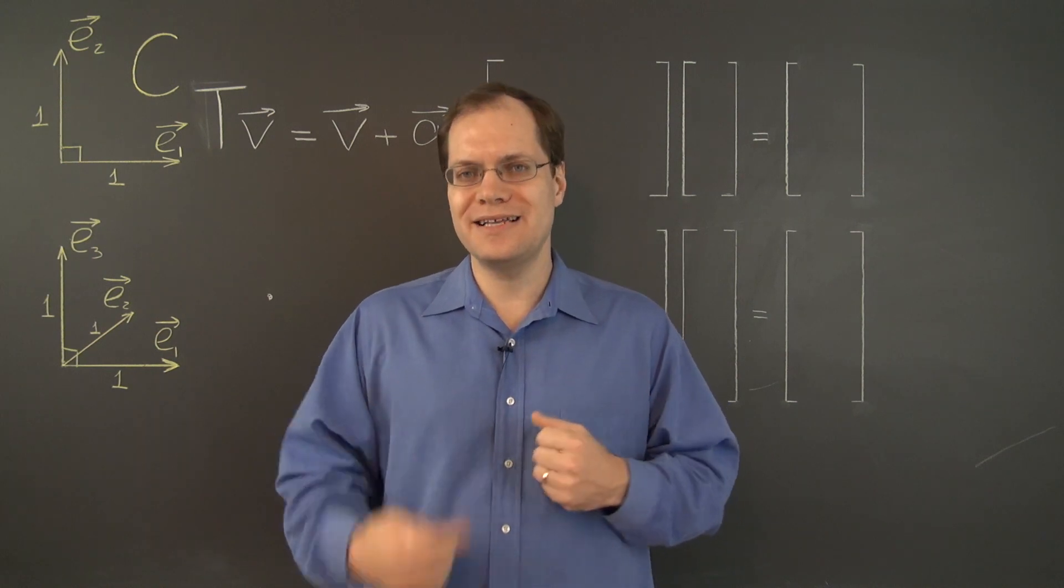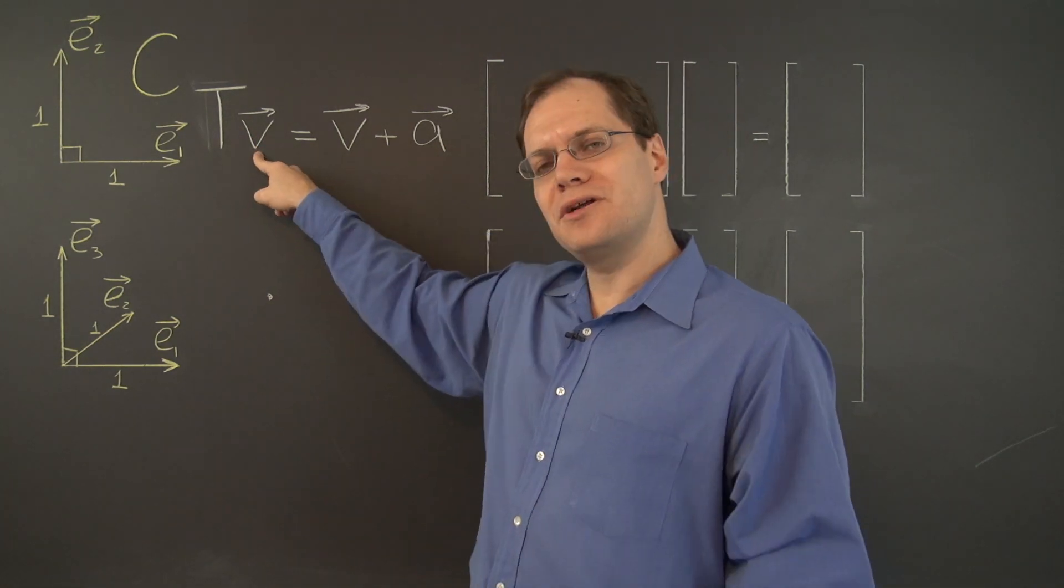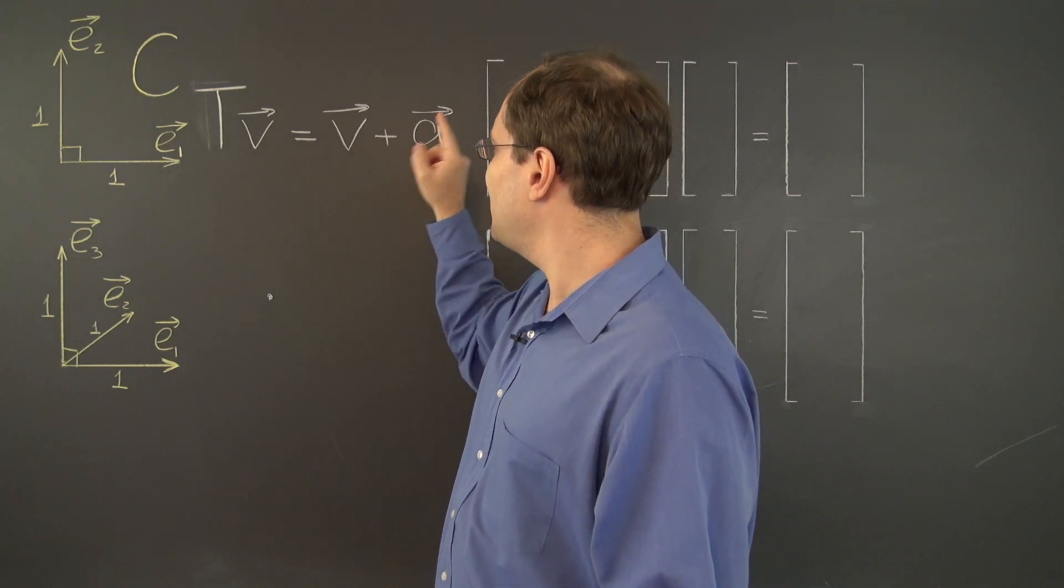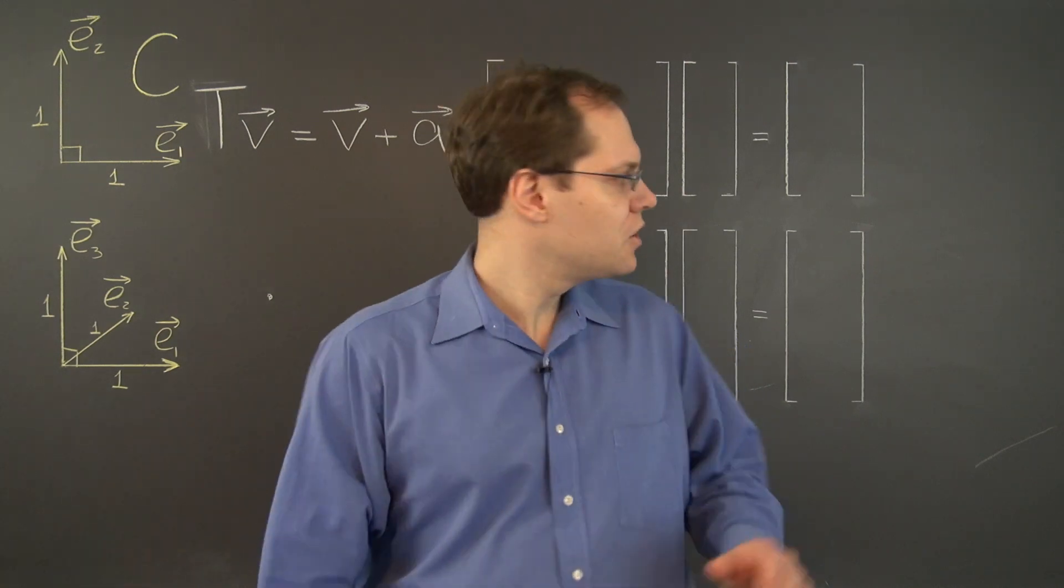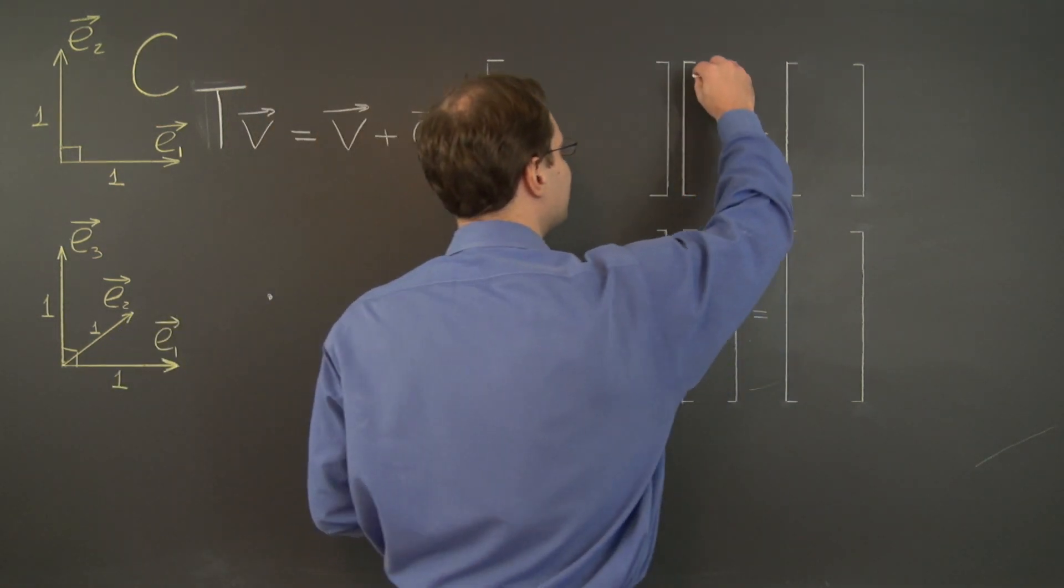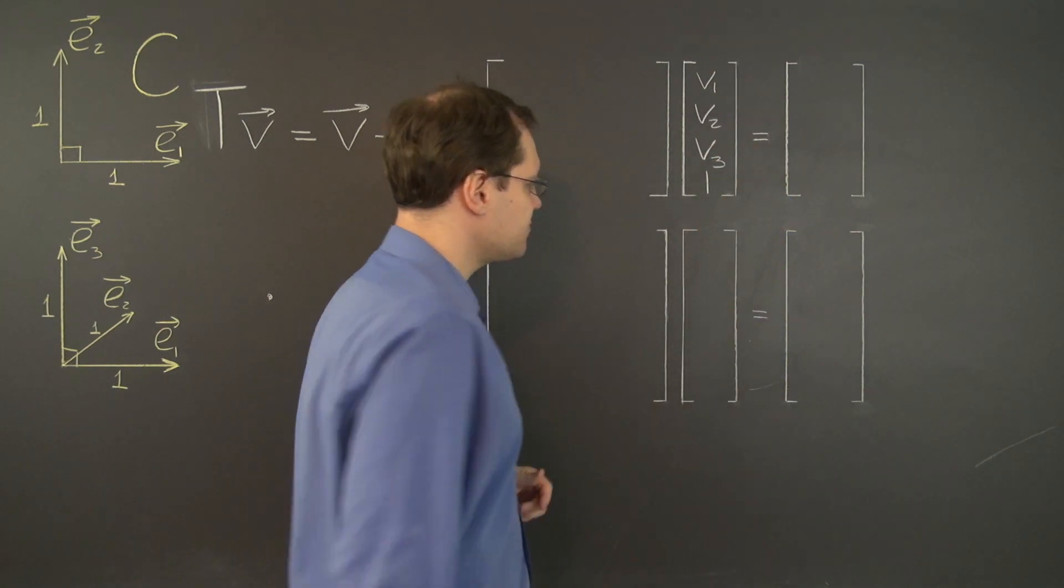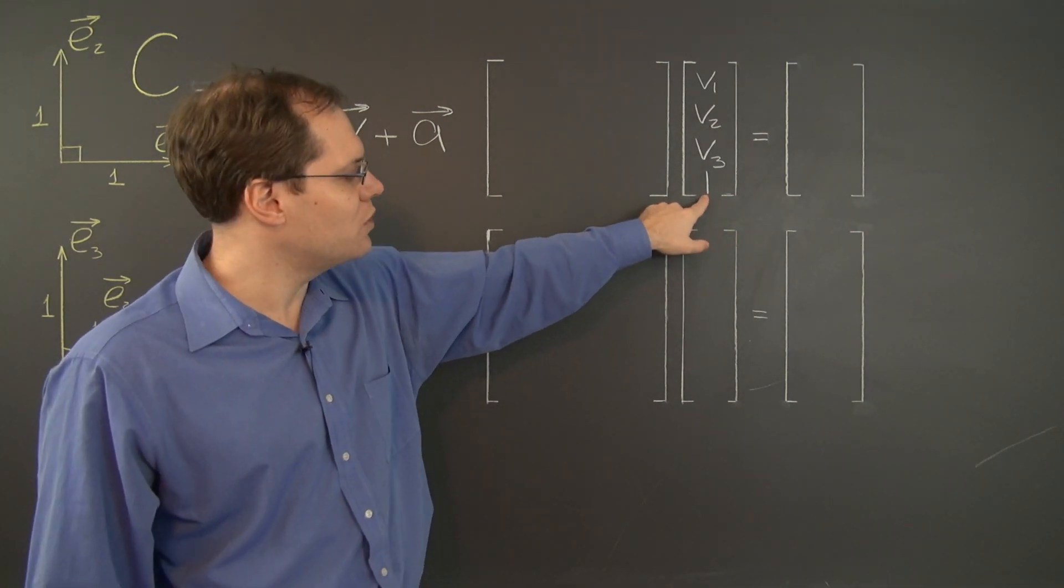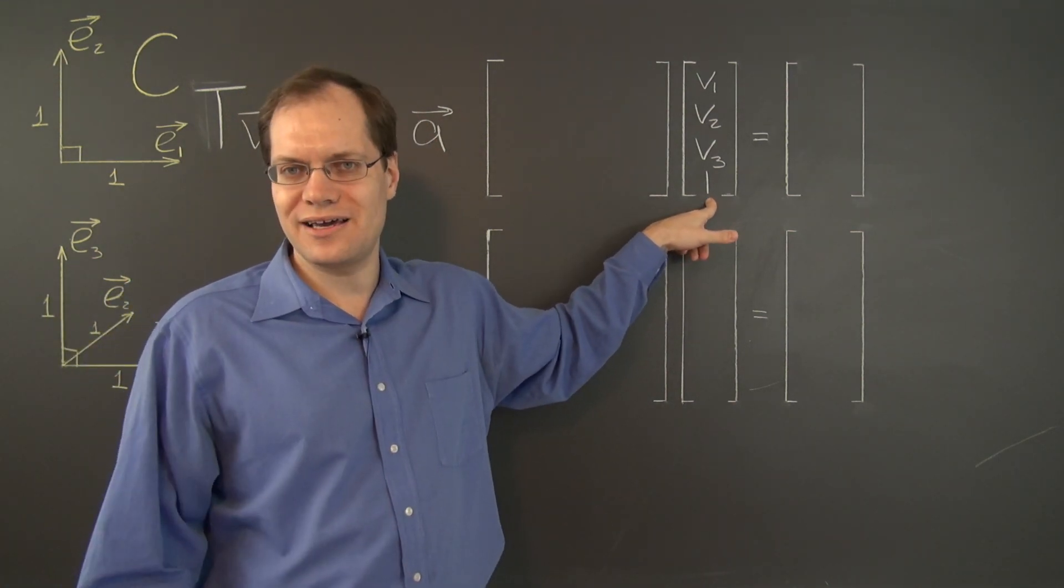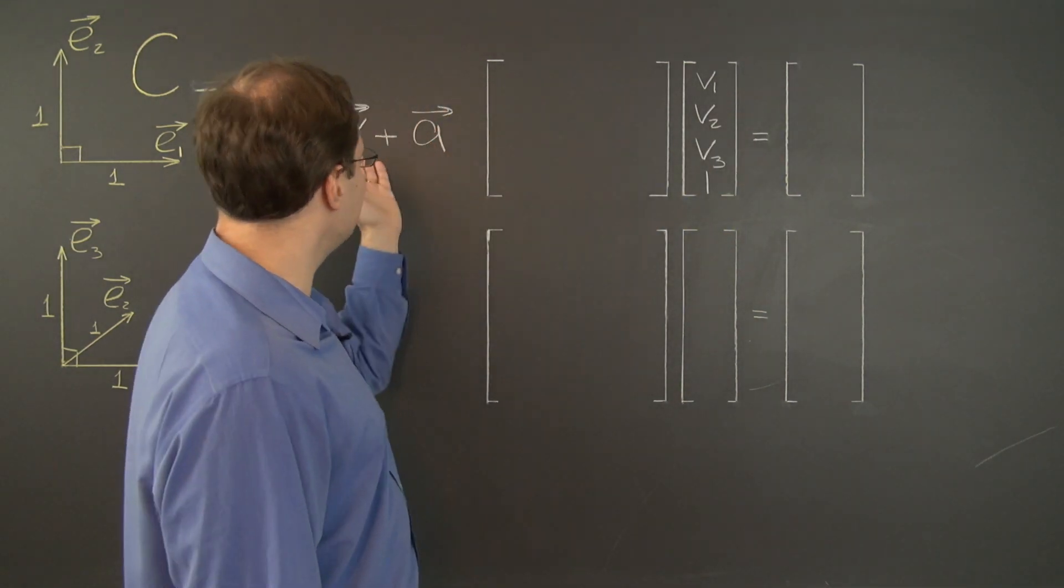And here is the trick. The trick is to augment the component space in a very simple way. So let's suppose that the vector V has components V1, V2, and V3. And then the vector A has components A1, A2, and A3. So here is the matrix that will represent the translation. And here is the vector V, except there will be an additional entry here. We're going to say V1, V2, V3, and put a 1 here. So it's an augmented component space with a 1 here. And this little tail will drag along for the ride some entries of this matrix which will result in a translation.